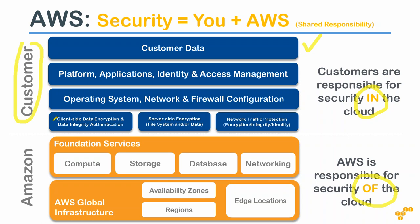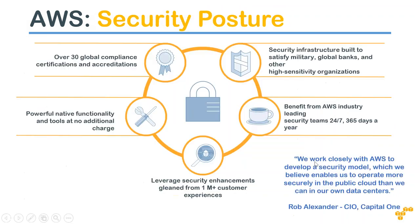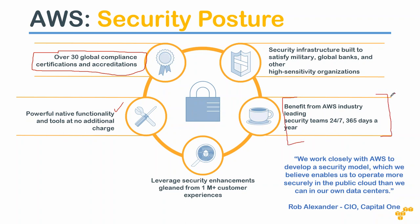Amazon handles all the blue and gray areas at the top of the stack; you handle the orange areas at the bottom — meaning your customer data and configurations. Amazon has 30+ global certifications and compliance standards already done, including PCI, HIPAA, and financial regulations. There is also a dedicated security team available 24/7/365, though this is a paid service available if you have developer-level or enterprise-level support.